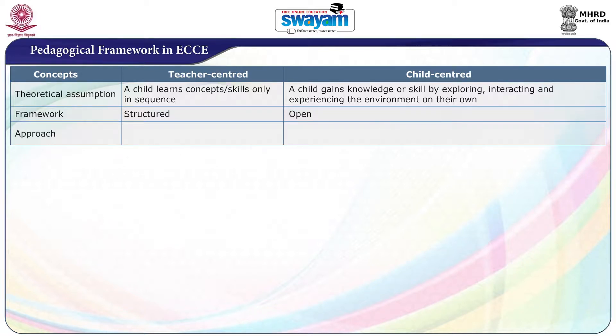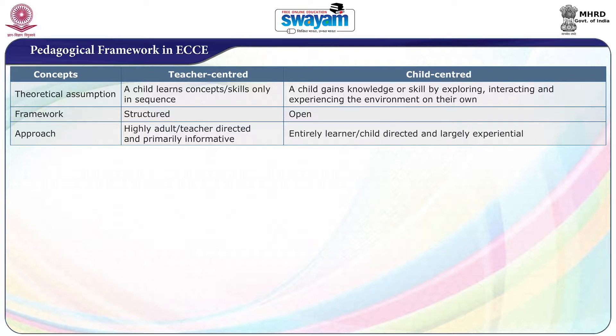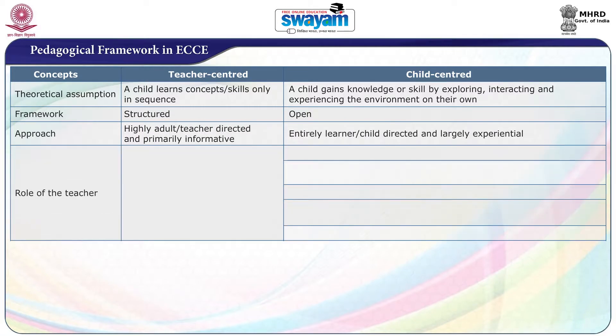Looking into the approach, teacher-centric learning or teaching is highly adult or teacher-directed and it is primarily informative. Whereas, the approach for child-centered learning is entirely child-directed and it is largely experiential.